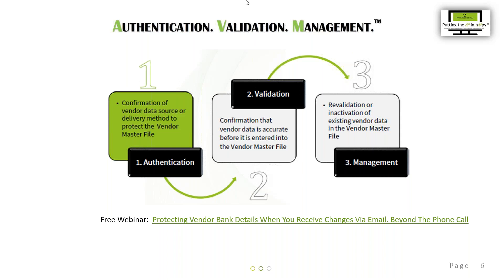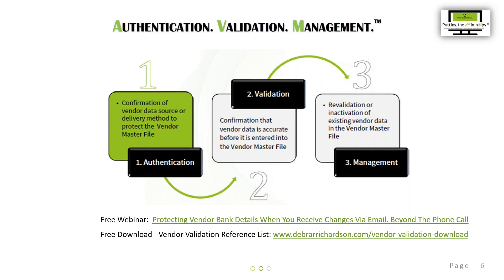Moving on to step two: Validation, where you validate vendor data before it is entered into your ERP. To help with this, I have a free download — a vendor validation reference list with resource links — which identifies resources to verify a vendor is real and not on any watch list. It is also divided based on the type of information being validated and on which document you'll find it, such as the invoice or a contract.